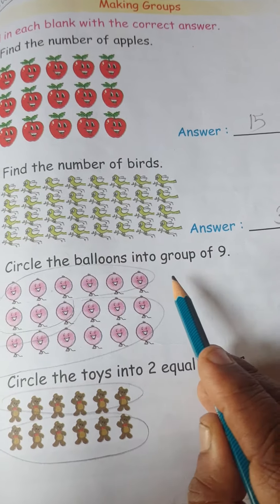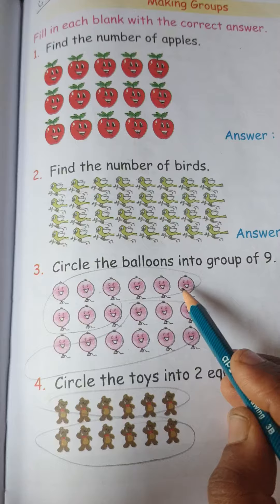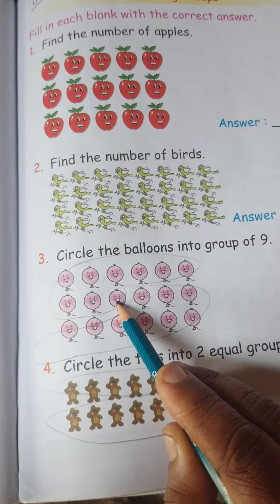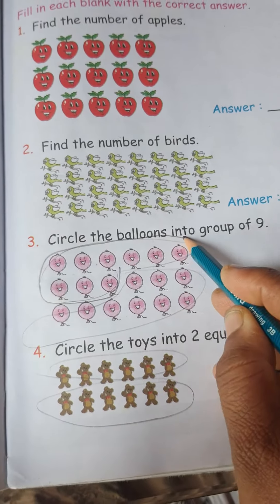Circle the balloons into group of 9. Means first, one group with 9 balloons: 1, 2, 3, 4, 5, 6, 7, 8, 9. So circle this, 9 balloons first.